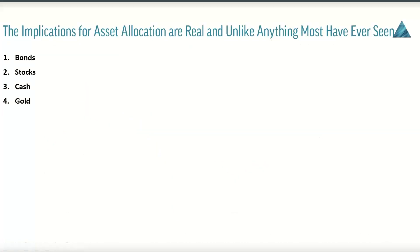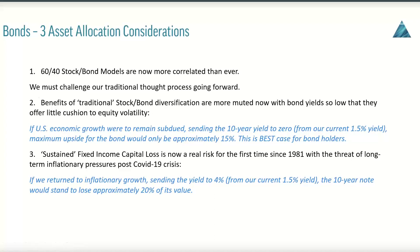Let's look at some implications specifically for these asset classes, starting with bonds. There are three things we need to consider with bonds. For those of you holding a traditional 60-40 stock bond model during the COVID crash, you experienced firsthand how correlated that allocation is. These 60-40 blend stock-bond models are more correlated now than ever, and that needs to be the basis for challenging our thought process and asset allocation models going forward.